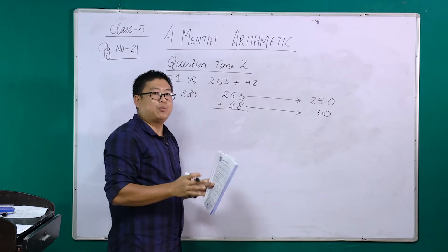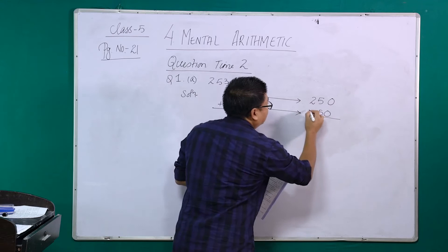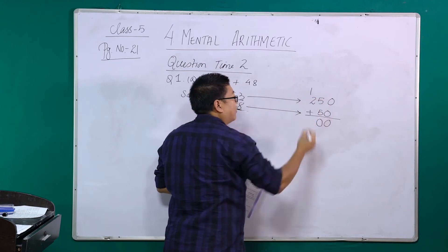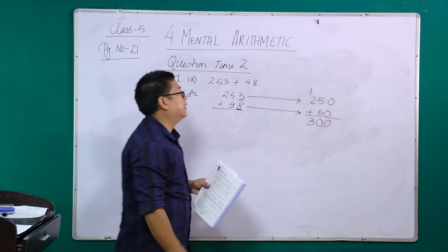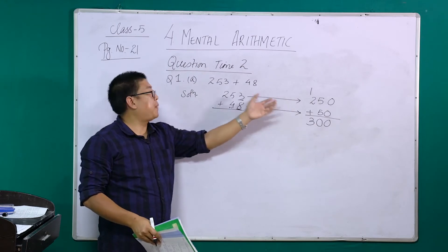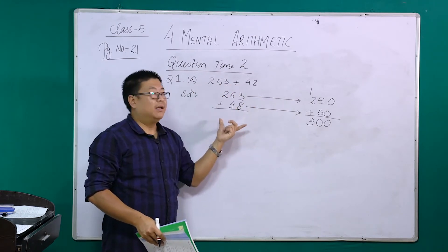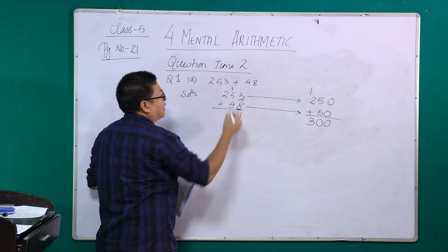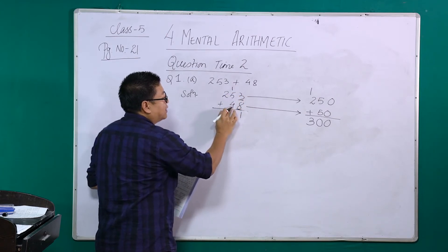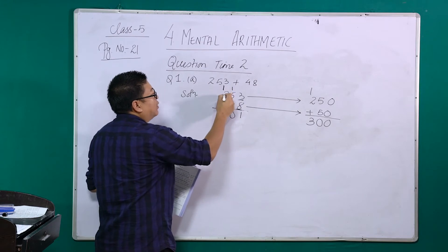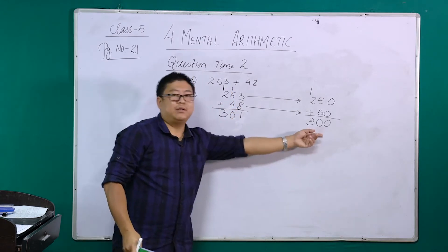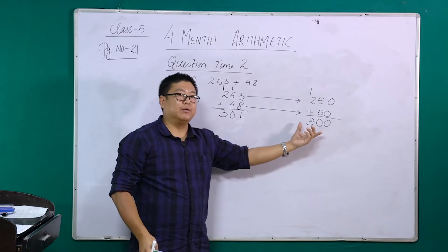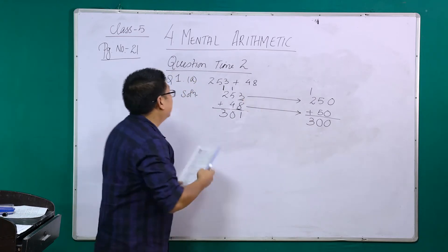After estimating, you add them: 0 plus 0 is 0, 5 plus 5 is 10, carry 1, 2 plus 1 is 3. So your rough estimation of the sum is 300. If you want to check, you can always add the actual numbers: 8 plus 3 is 11, carry 1; 5 plus 4 plus 1 is 10, carry 1; 2 plus 1 is 3. So the actual sum is 301. They are almost the same — this is estimating to the nearest 10.